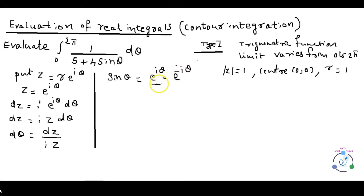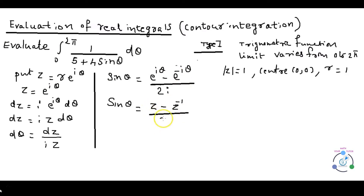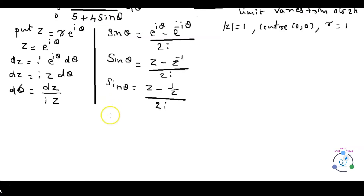We know that sin θ = (e^(iθ) − e^(−iθ)) / 2i. Replacing e^(iθ) with z and e^(−iθ) with z^(−1), sin θ becomes (z − z^(−1)) / 2i. Since z^(−1) = 1/z, sin θ = (z − 1/z) / 2i. Taking LCM, sin θ = (z² − 1) / (2iz).